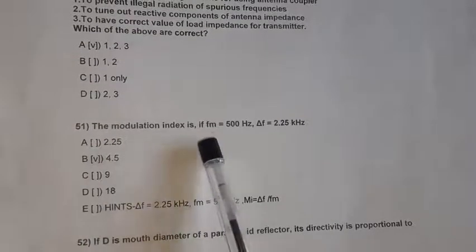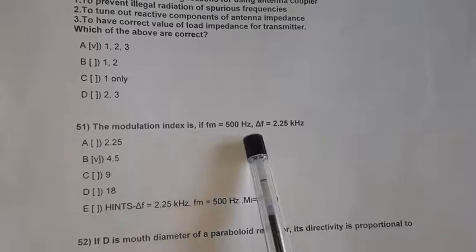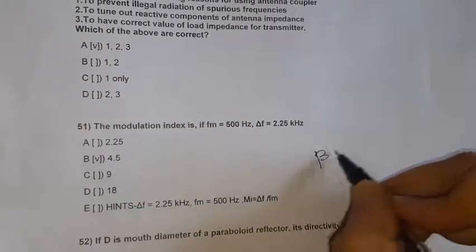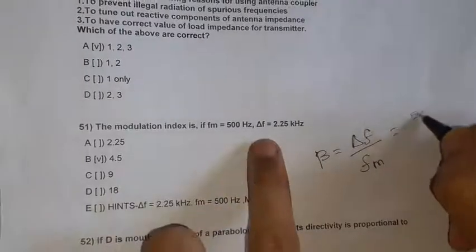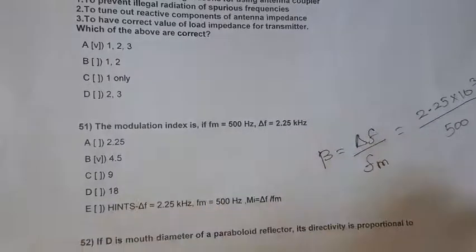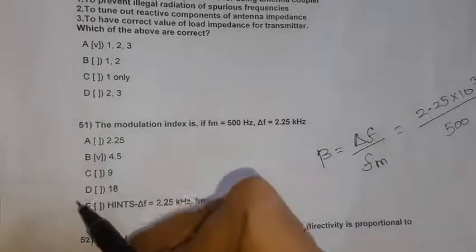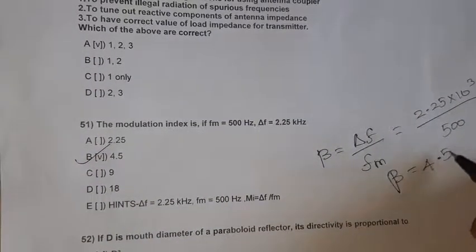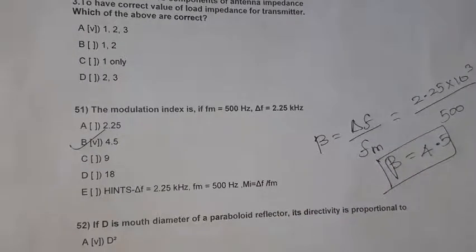Question 51: The modulation index. If FM equals 500 Hz and delta F equals 2.25 kHz, what is the modulation index? The formula is beta equals delta F divided by FM. So 2.25 kHz into 10 cubed divided by 500 gives us 4.5. Beta equals 4.5 is the right answer — there is no unit for modulation index.